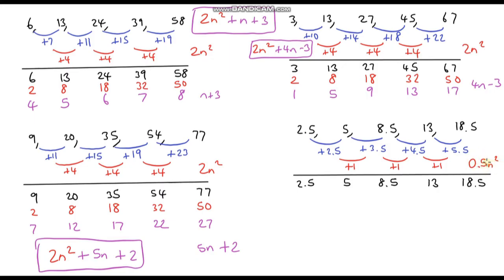I'm going to write down my original sequence, and this time I'm going to write down the sequence 0.5n squared. 1 squared is 1, half of 1 is 0.5. 2 squared is 4 and half of 4 is 2. 3 squared is 9, half of 9 is 4.5. 4 squared is 16 and half of 16 is 8. And 5 squared is 25, half of 25 is 12.5. So just like before I'm going to subtract this sequence from my original sequence.